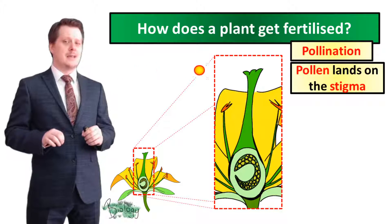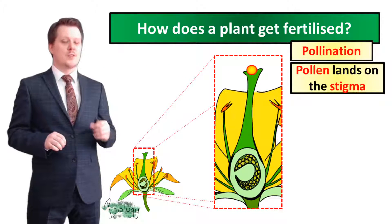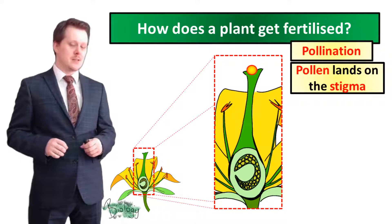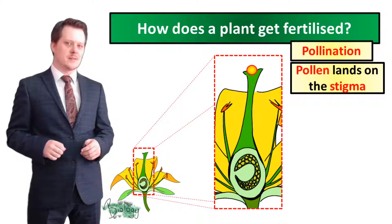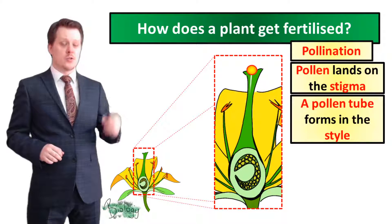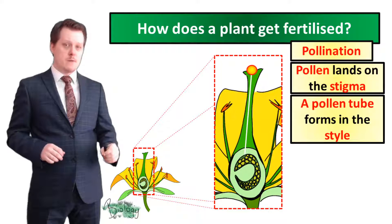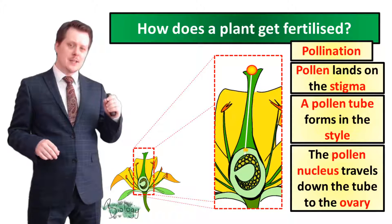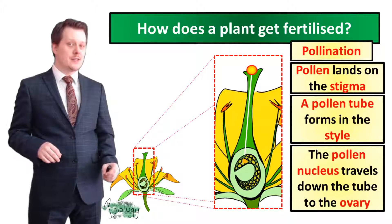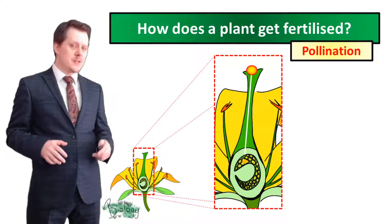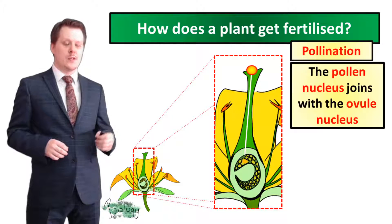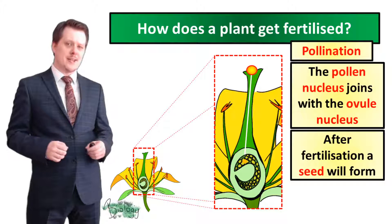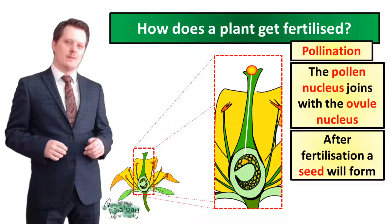Let's look at how a plant gets fertilized. First, the pollen has to land on the stigma. The pollen will be transported to the stigma either by the wind in wind-pollinated plants, or by insects in insect-pollinated plants. When this happens, a pollen tube forms from the stigma to the ovary through the style. This allows the nucleus of the pollen cell to travel from the stigma down the style and into the ovary, where it joins with the nucleus of an ovule or egg cell. This process is called fertilization, and after this has occurred a seed will form.